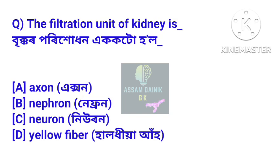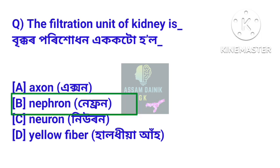Question 18: The filtration unit of the kidney is — Bicarbonate or ECOC to hol. Answer: Nephron. Nefron hole bicarbonate or ECOC — nephron is the filtration unit of the kidney.